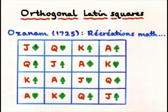And if you look at the green symbols, which are the suits — the diamond, heart, spades and clubs — they also form a Latin square. You can actually do this in what we now call orthogonal Latin squares. The point is that each combination of a red symbol, a value, and a green symbol, a suit, appears exactly once.